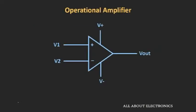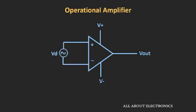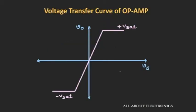In the last video, we had seen the basics of this operational amplifier and we had seen that this op-amp is a very high gain differential amplifier. The gain of the op-amp is in the range of 10 to the power 5 to 10 to the power 6. We had seen that even if we apply a very small differential input voltage between the input terminals, the output will get saturated towards the bias points. Now, let's say the saturation voltage is 10V and the open-loop gain is 10 to the power 6 — this op-amp will get saturated at just 10µV of differential input voltage.